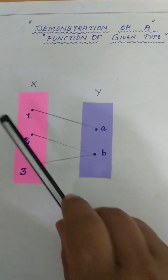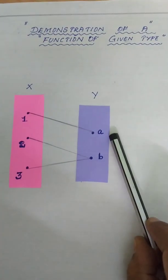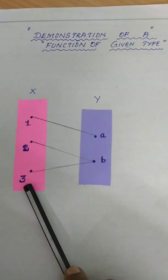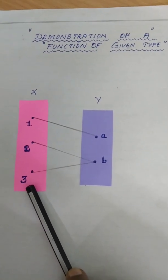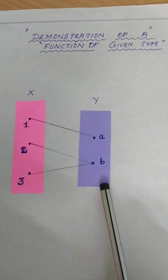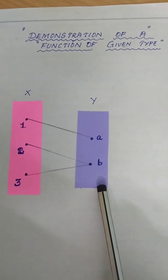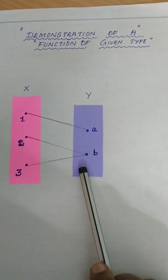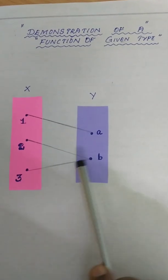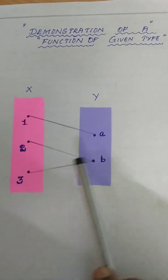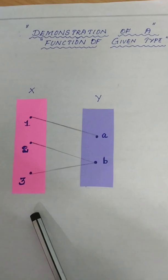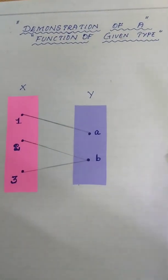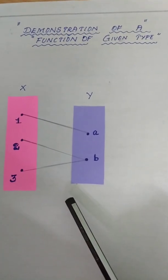I have taken two strips. This strip X denotes the domain, Y denotes the range. We have taken the elements in such a way it will match the onto function, not the one-to-one function. So we are connecting in such a way to demonstrate this given type of function.